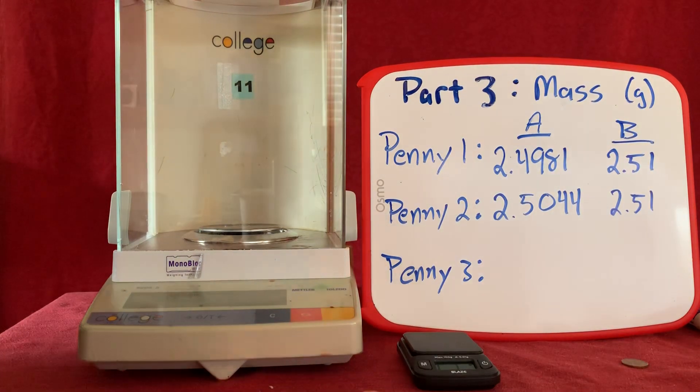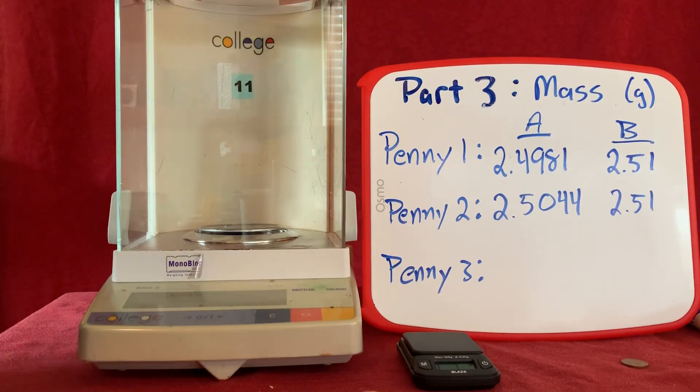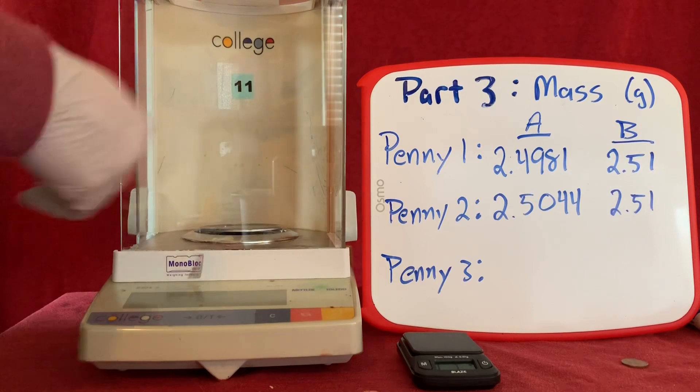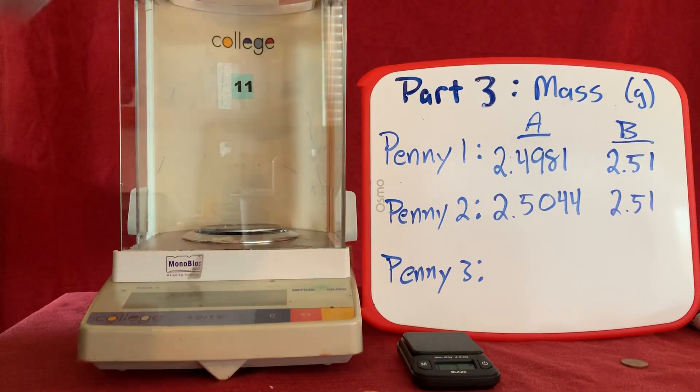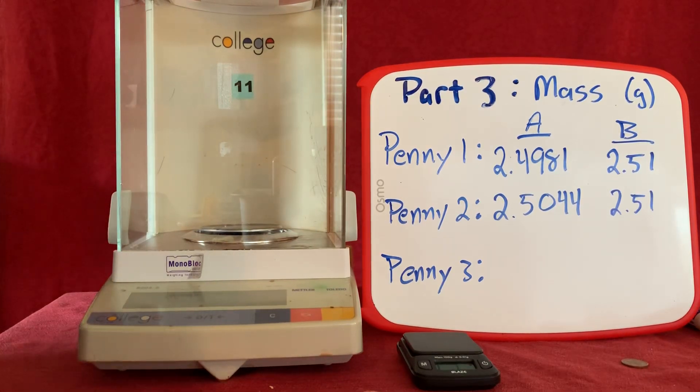Let's take a look at penny three. Now to use the balance, the first thing I want to do is make sure that it's clean and clear of any other items in the balance area. We have a few different doors that we can open and close depending on what it is we're trying to load into the balance. Whenever we're taking a measurement, we want to make sure all those doors are closed.